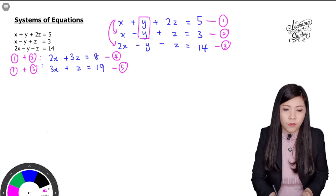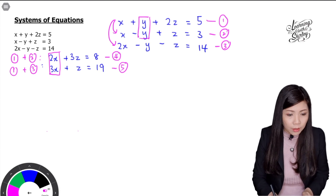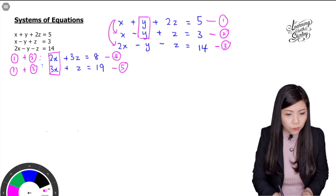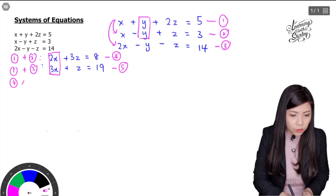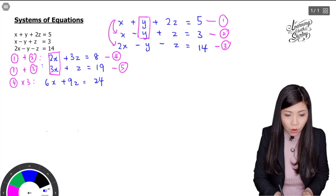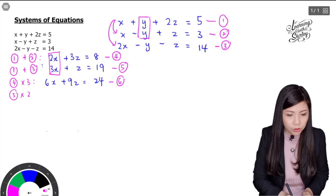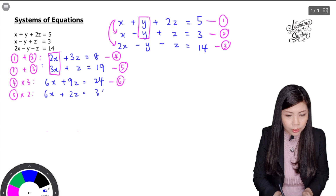Now we're going to solve equations 4 and 5 using the elimination method. To make the x terms match, I'll multiply all terms in equation 4 by 3, giving 6x plus 9z equals 24 — this is equation 6. Then I'll multiply all terms in equation 5 by 2, giving 6x plus 2z equals 38 — this is equation 7.